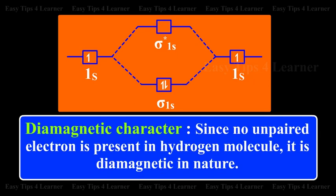Diamagnetic character: Since no unpaired electron is present in hydrogen molecule, it is diamagnetic in nature.